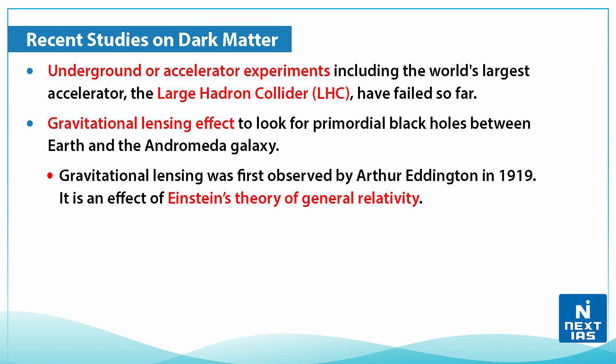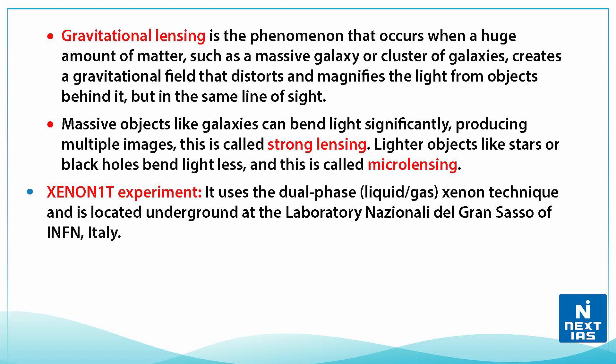There is also a gravitational lensing effect used to look for primordial black holes between Earth and the Andromeda galaxy. Gravitational lensing was first observed by Arthur Eddington in 1919 and is an effect of Einstein's theory of general relativity. It is a phenomenon that occurs when a huge amount of matter or a cluster of galaxies creates a gravitational field that distorts and magnifies the light from objects behind it, but in the same line of sight.